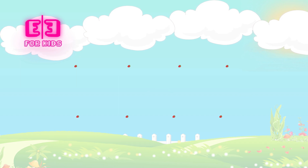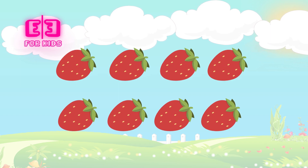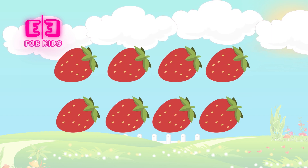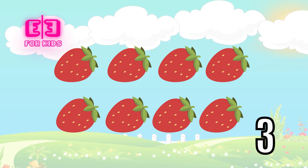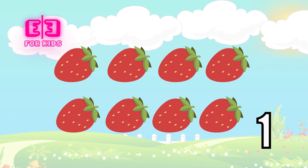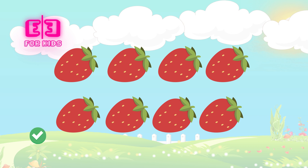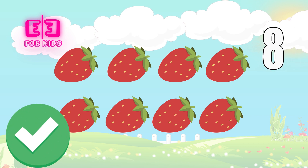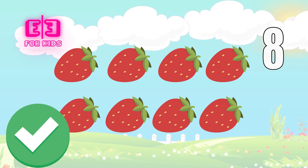How many strawberries are there on the screen? Three, two, one. Correct, kids. There are eight strawberries on the screen.